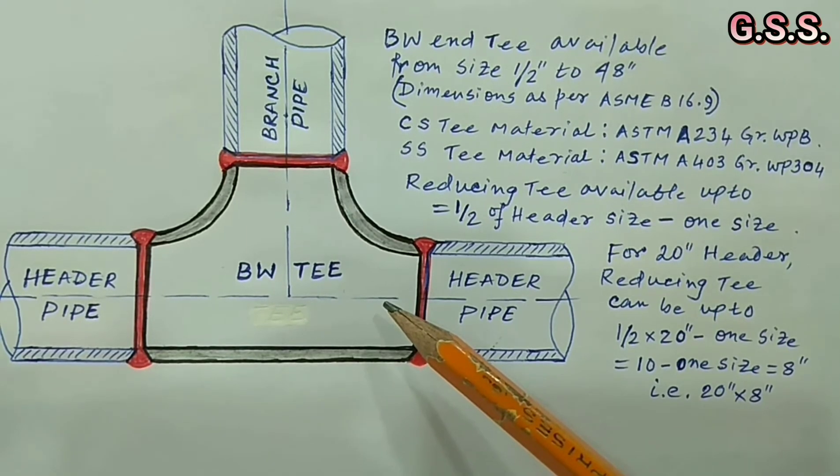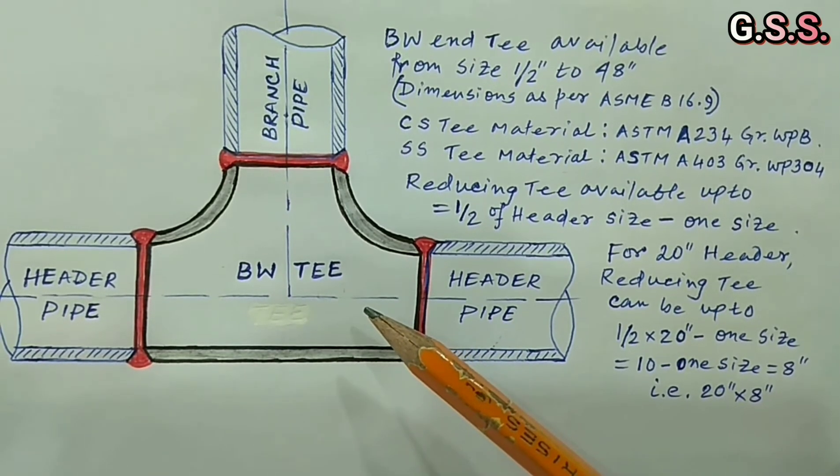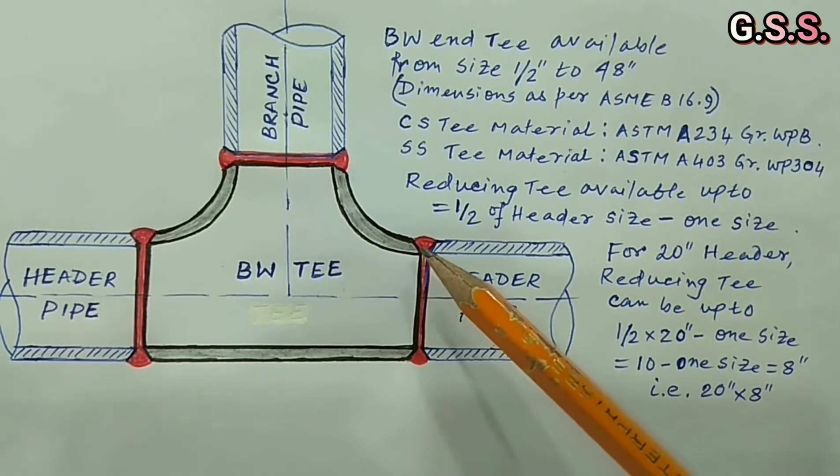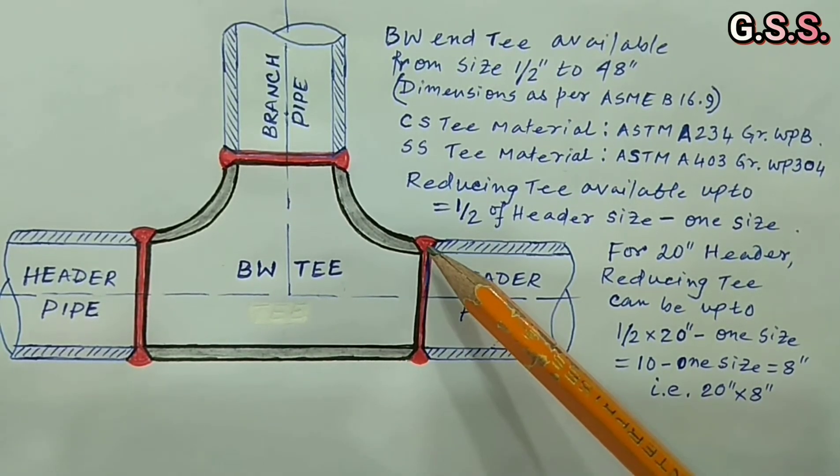Ts are used for high pressure and high temperature critical service where butt welding is necessary and radiography requirement is there.